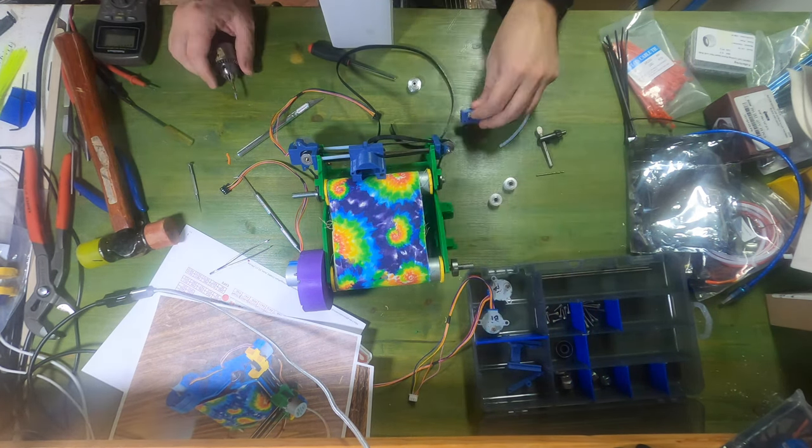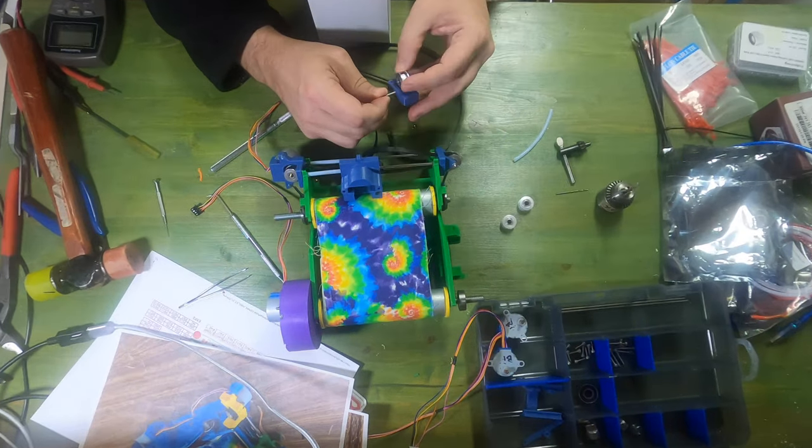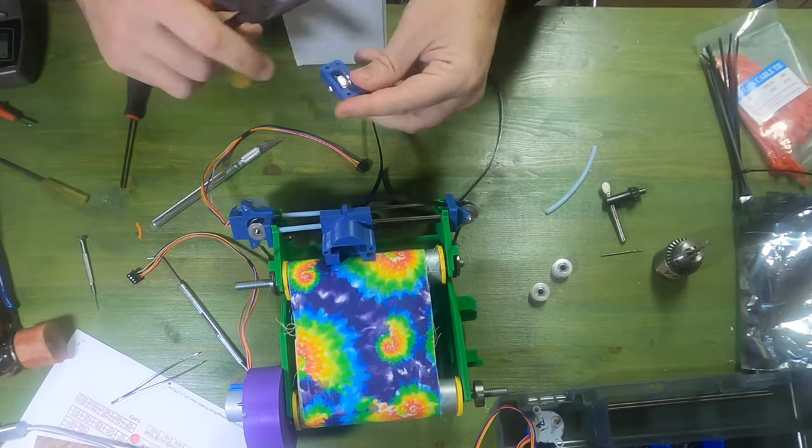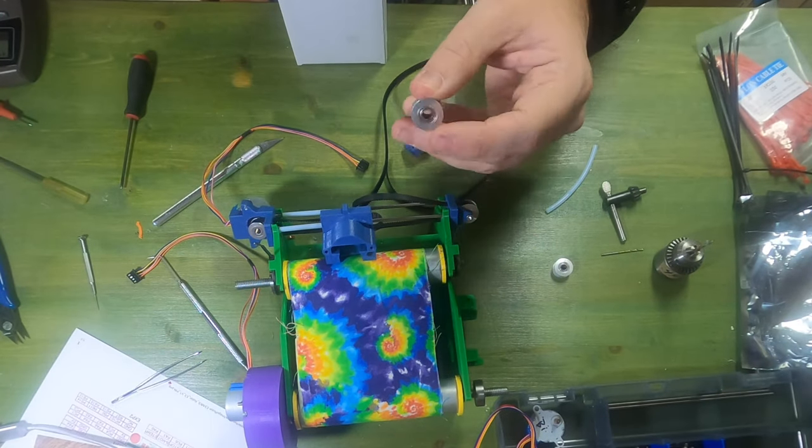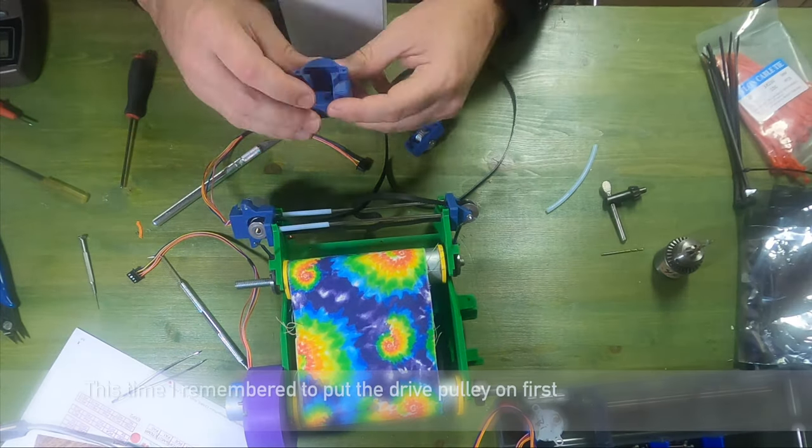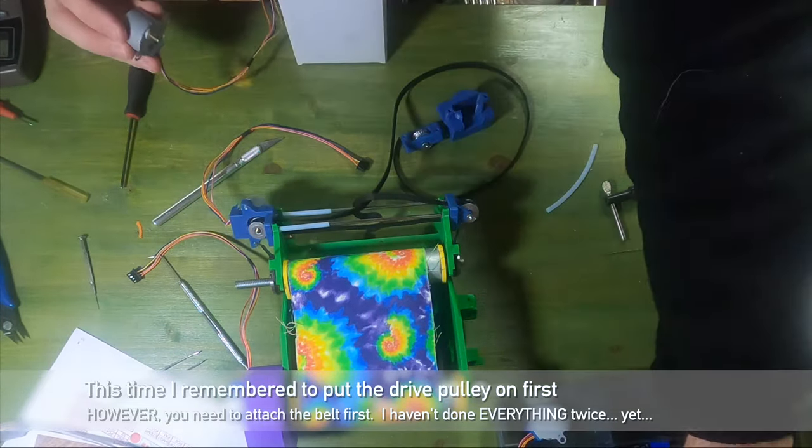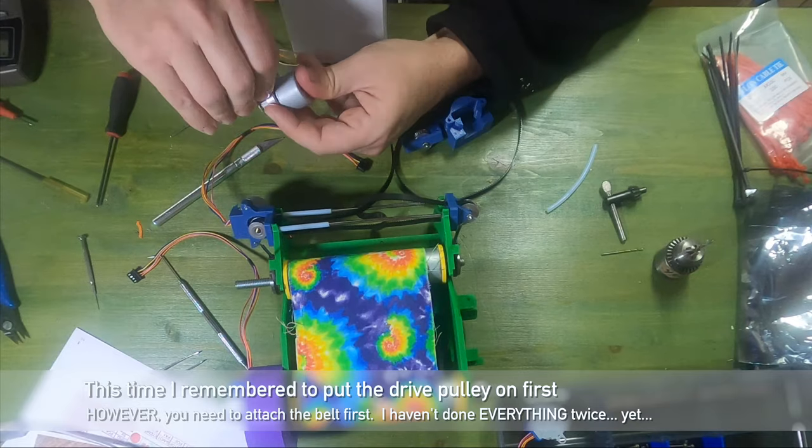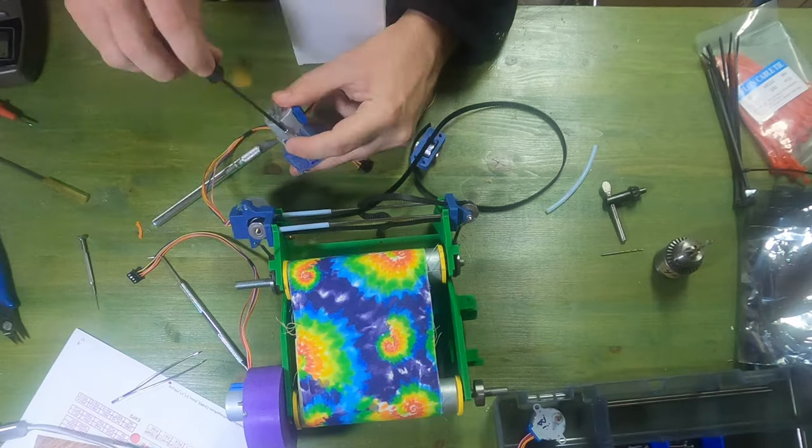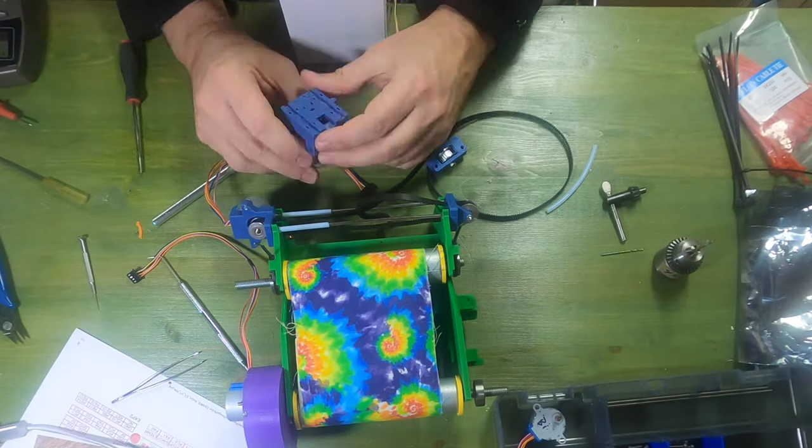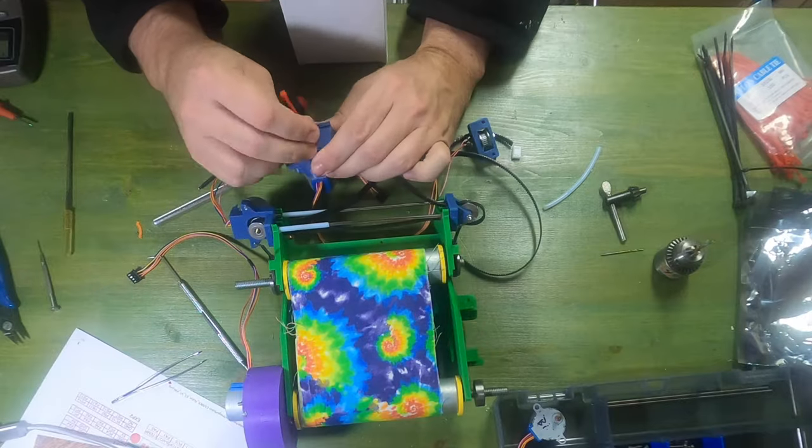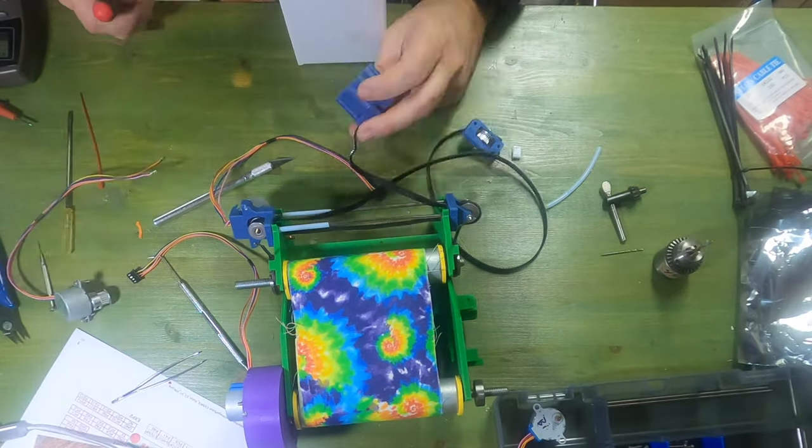Then we have the tensioner block on top. Might as well get the idler on because we know how that goes. These idlers have ball bearings on each side. Right there. I figure attaching it will be the last step. Once we zip tie it on there, it'll be a lot harder to work with. But I'm not really sure how the belt tensioner works. Do the belt before we put the motor on.